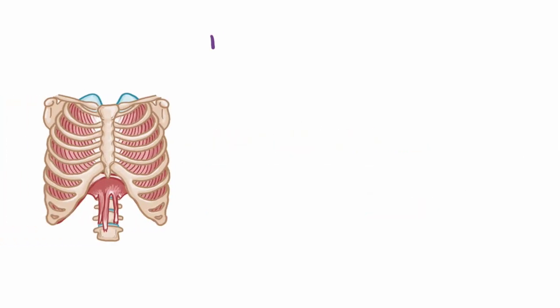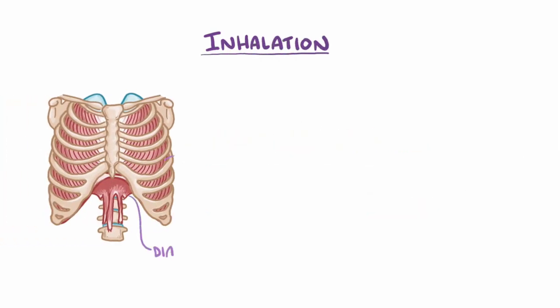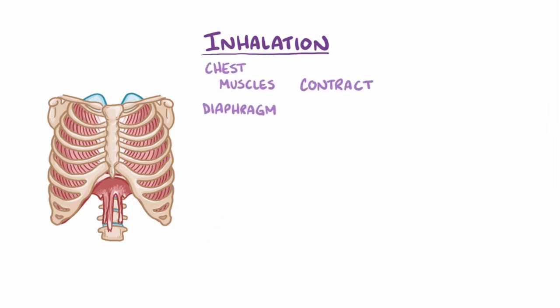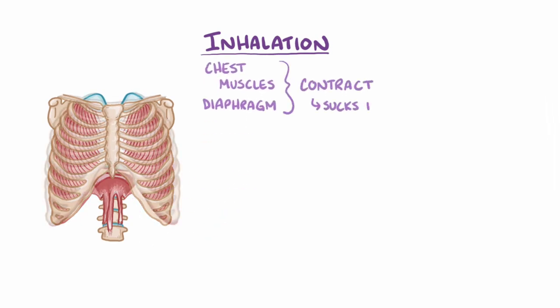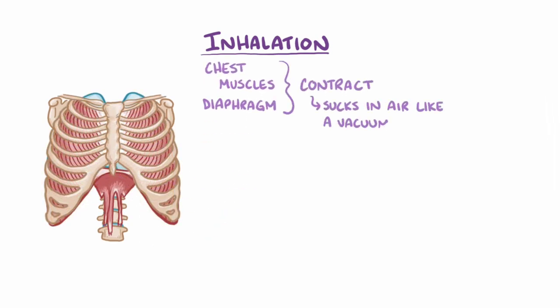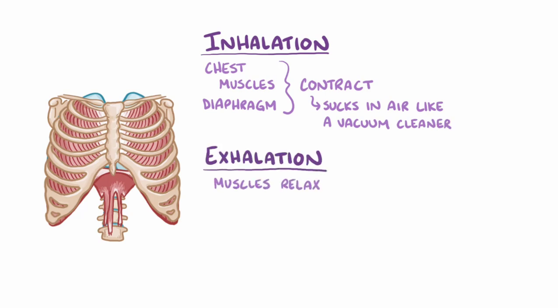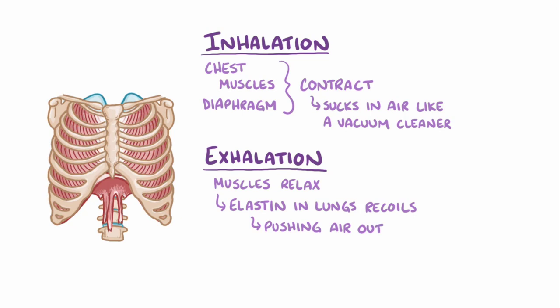Normally during an inhalation, the diaphragm and chest wall muscles contract to pull open the chest, and that sucks in air like a vacuum cleaner. Then, during an exhalation, the muscles relax, allowing the elastin in the lungs to recoil, pulling the lungs back to their normal size and pushing that air out.